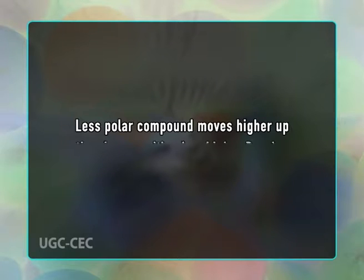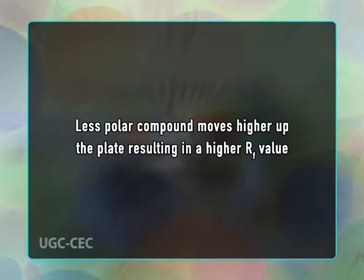Separation of compounds is based on the competition of the solute and the mobile phase for binding places on the stationary phase. If normal phase silica gel is used as stationary phase, it can be considered polar. Given two compounds that differ in polarity, the more polar compound has a stronger interaction with the silica and is more capable of displacing the mobile phase from the binding places. As a consequence, the less polar compound moves higher up the plate, resulting in a higher RF value. If the mobile phase is changed to a more polar solvent, it is more capable of displacing solutes from the silica binding places and all compounds will move higher up the plate.